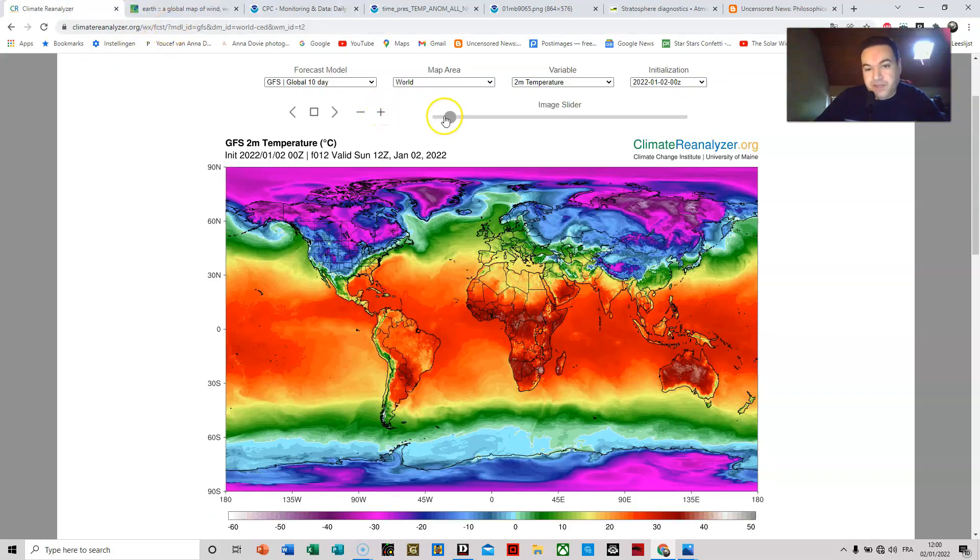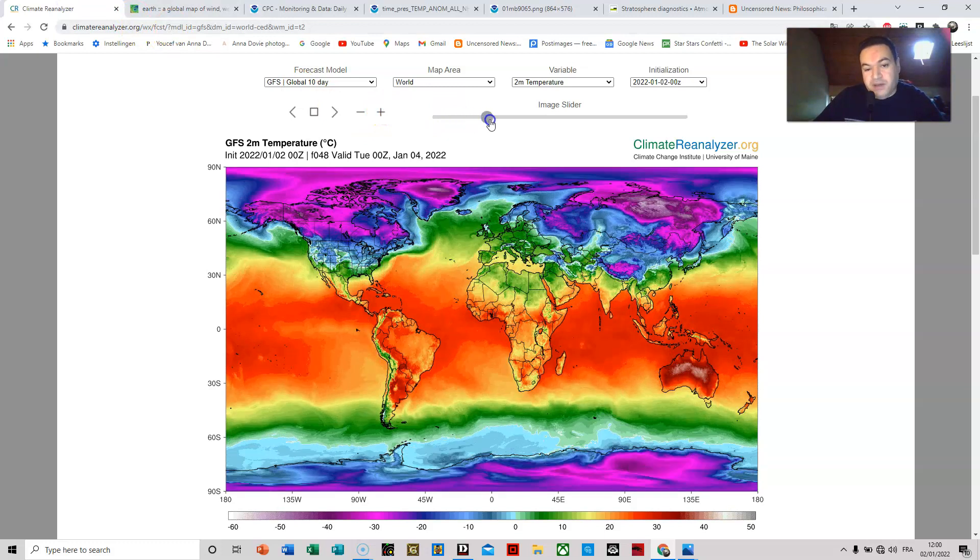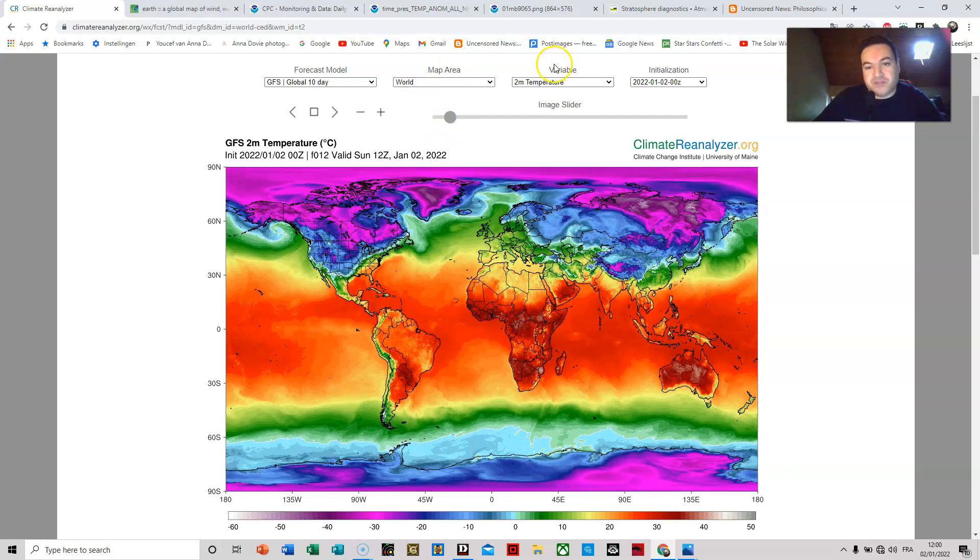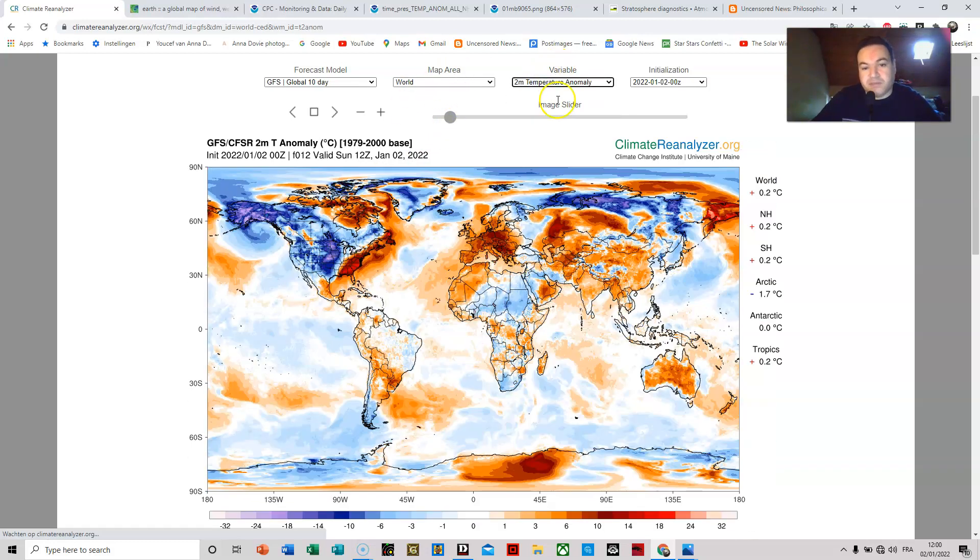Now we can actually see in the forecast that this cold air incursion doesn't really last long. It's actually impressive when we look at the temperature anomalies because we are talking about at least 20 degrees below average, and that's very cold for these regions. They are not used to it.